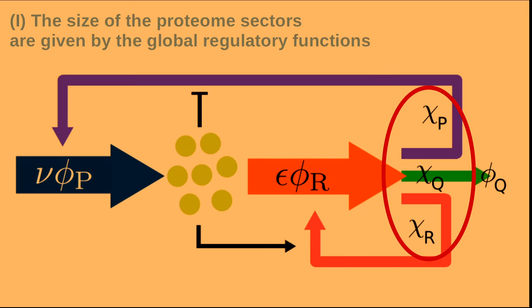I'm going to introduce our framework, which is composed of four main parts. The first ingredient is the regulatory function of the proteome sector, which is basically the function that tells how the total biomass flux is divided into the three sectors we are considering: the ribosomal, the constitutive, and the housekeeping sector. Basically this function tells which fraction of ribosomes are producing other ribosomes, constitutive protein, and housekeeping protein.